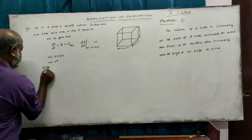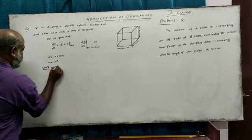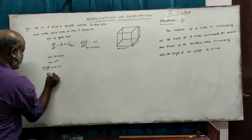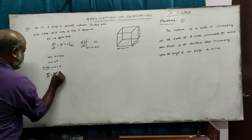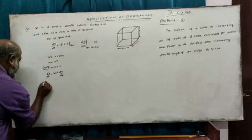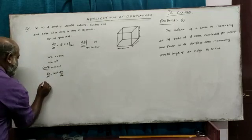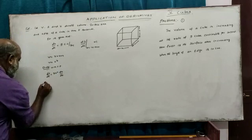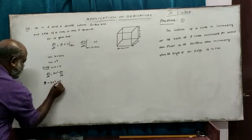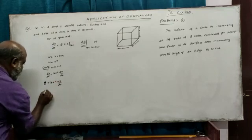Differentiate with respect to t: dV/dt equals 3x squared times dx/dt. So, dV/dt equals 9, giving us 9 equals 3x squared times dx/dt.